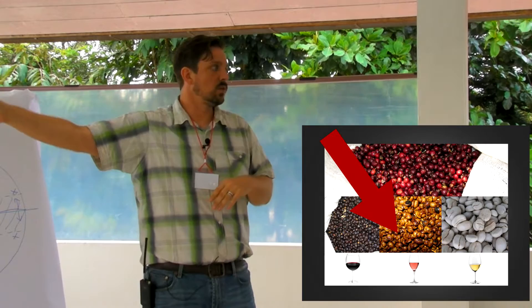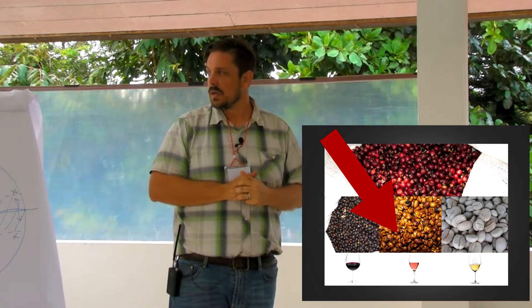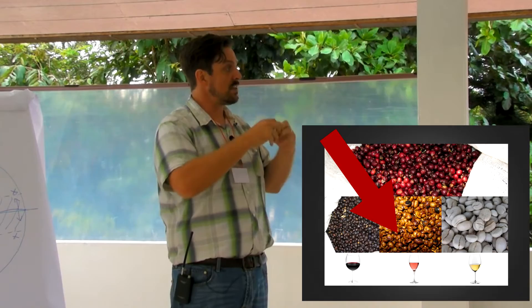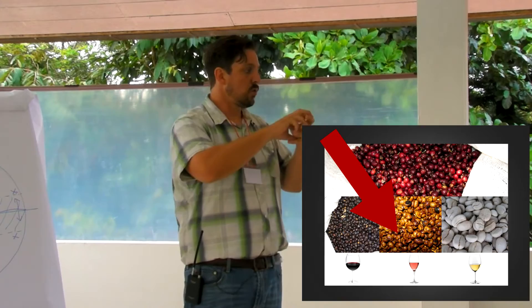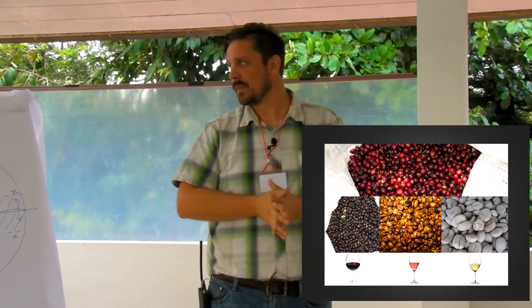White wine is like wash process where you remove the skins and process it that way. Honey process in the middle is a hybrid between the two. In winemaking, you get a rosé wine in two ways: either mix a red wine and a white wine together, or remove all the red skins, let it ferment, and then at the end add a small amount of red skins back in to impact the color and the flavor.